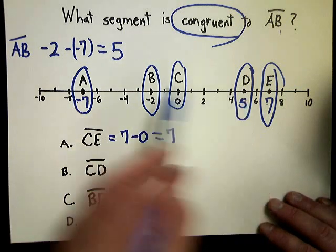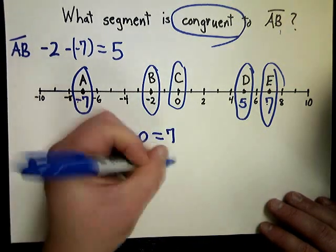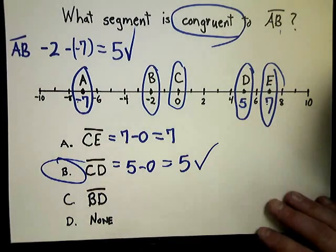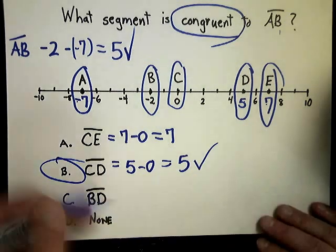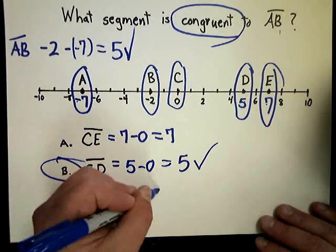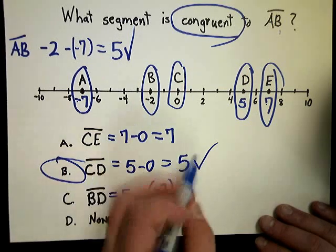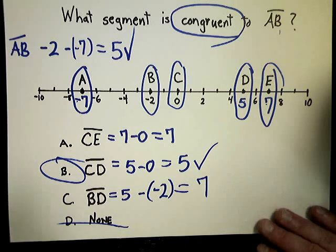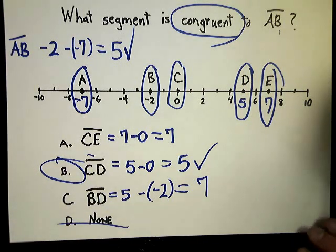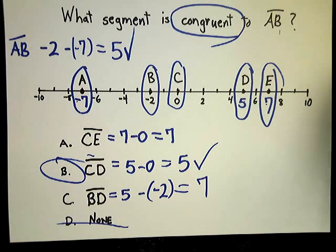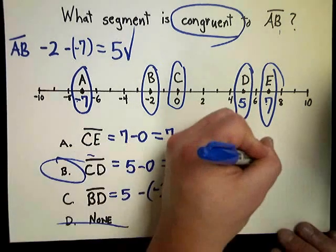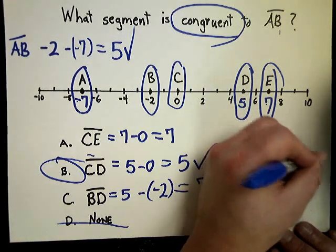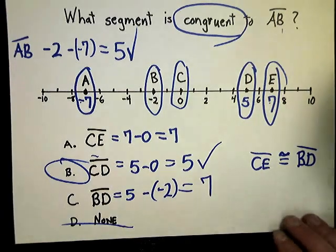CD is five minus zero. So it is five. This is five. This is five. So I can say that CD is congruent to AB. Let's do BD just because five minus negative two. Five minus negative two is seven. So that's not right. And it can't be none because we already found one. Incidentally enough, CE and BD are congruent. So you could show that they are congruent if you wanted to. CE congruent to BD because they're the same length.